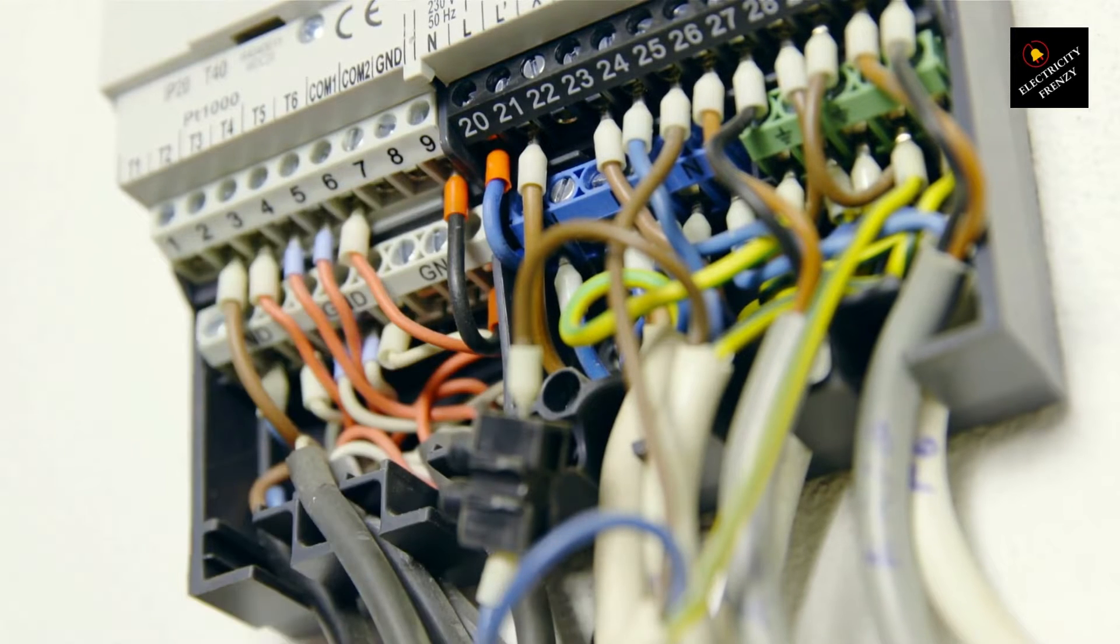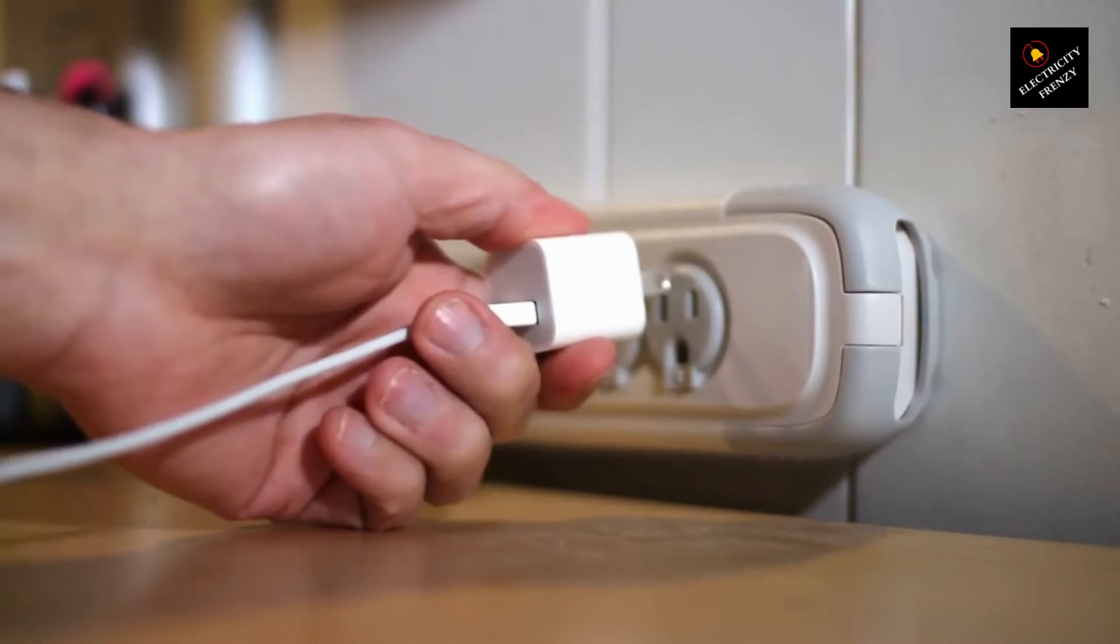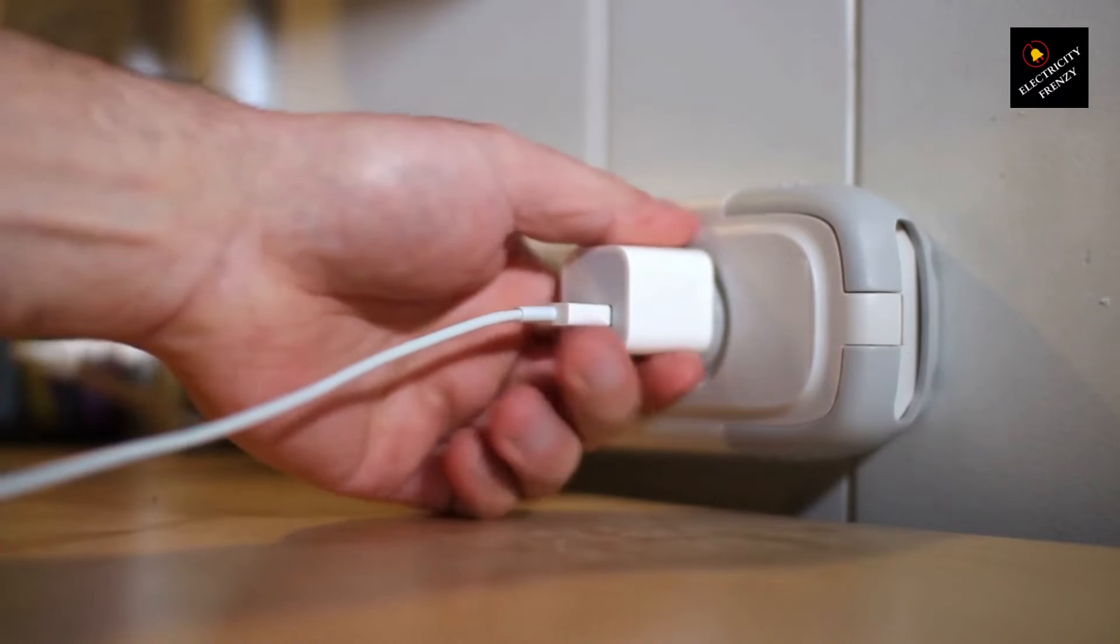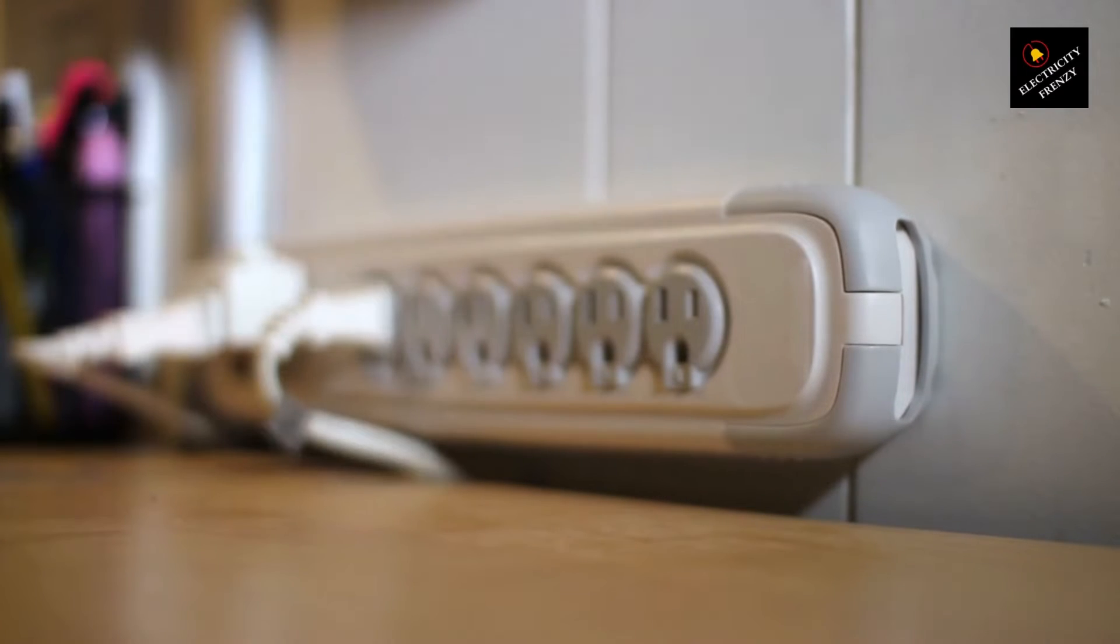Short circuit: A short circuit occurs when a live wire comes into direct contact with either the neutral wire or the ground. This connection bypasses the intended circuit path, causing a sudden surge of electrical current. As a protective measure, the circuit breaker trips to prevent further damage or potential hazards.